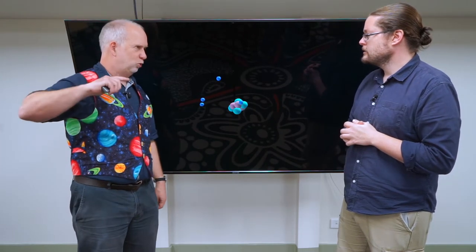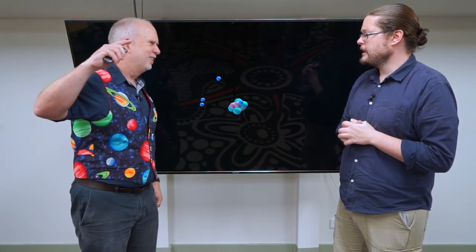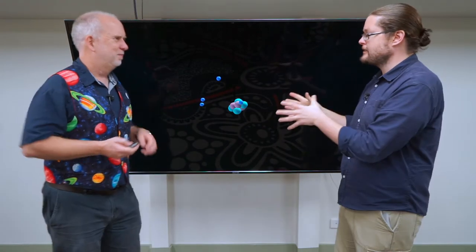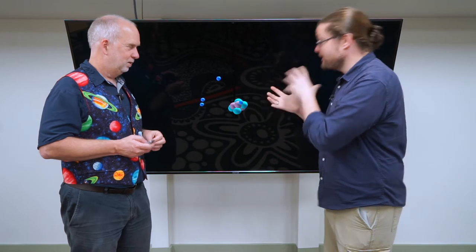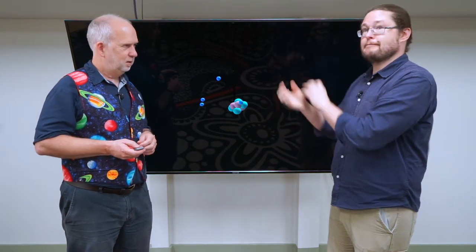Which is a bit weird. Why would it have energy number one, energy number two, but never energy one and a half? So there clearly has to be something going on with the way the electrons and atoms are actually physically moving and operating.